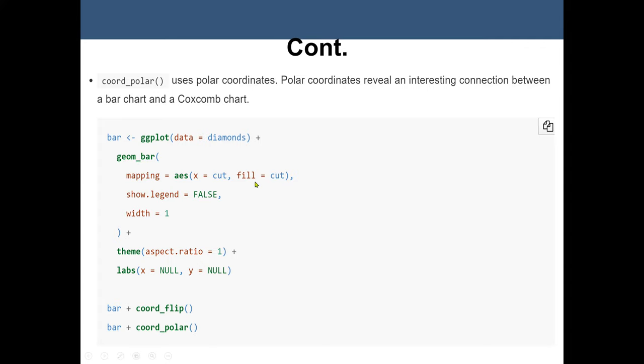Then we plot our bar chart, so geom_bar. The mapping, we set the aesthetic to cut. The fill, the cut. We don't want to show the legend. So we have show.legend is false. The width is 1. We also set theme to the aspect ratio to 1. And also the labs, X is null, Y is null. Then we have our coordinate flip and also coordinate polar.